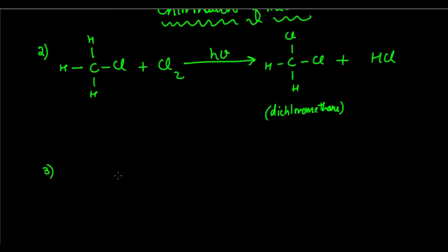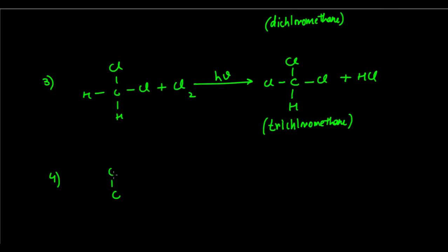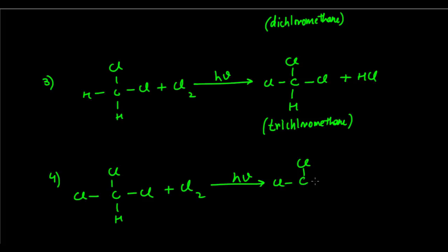Next, this dichloromethane (CH2Cl2) is again going to react with Cl2 in the presence of hν very vigorously, and it is going to form CHCl3 plus HCl again. This is trichloromethane. Ultimately, this trichloromethane is going to react with Cl2 in the presence of sunlight to give CCl4, which is called tetrachloromethane — or better known as carbon tetrachloride.